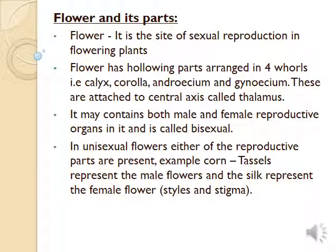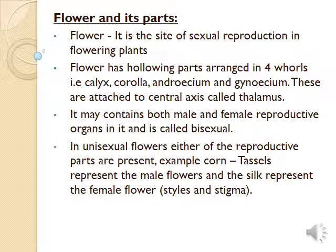The next part is the corolla, the second whorl of the flower. It is in different colors and helps in pollination. The third part is the stamen, the male sex organ of a flower. The fourth part is the carpel, the female sex organ. Calyx and corolla are considered accessory parts, meaning they indirectly help in reproduction. The stamen and carpel are essential parts, directly involved in reproduction.